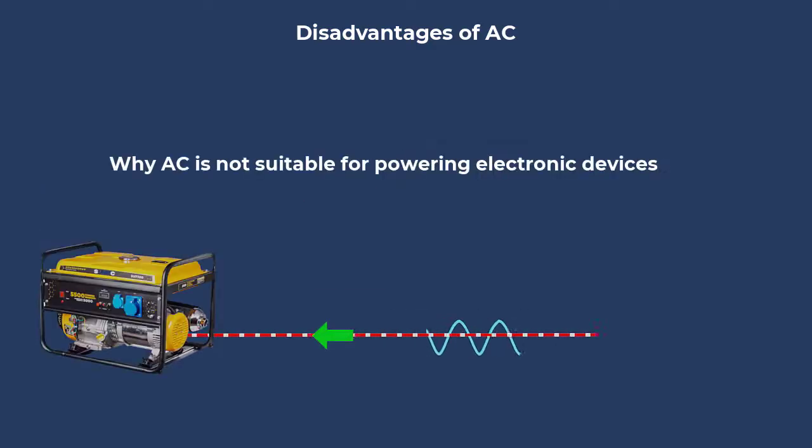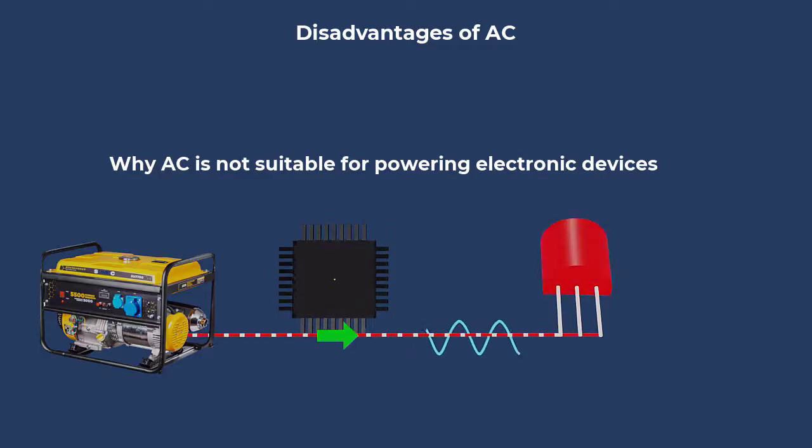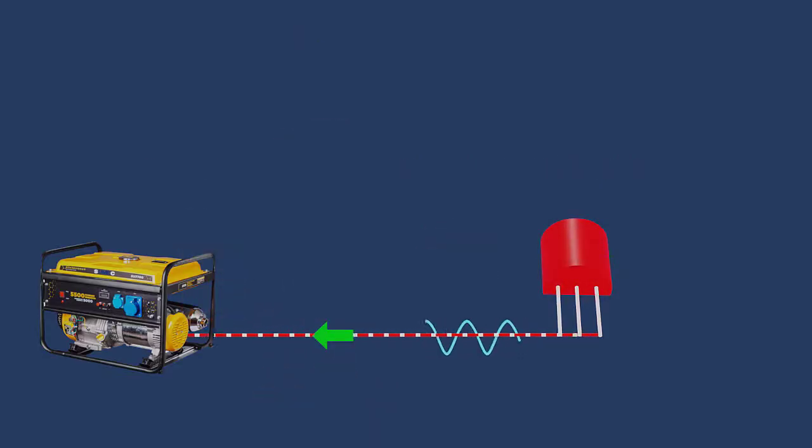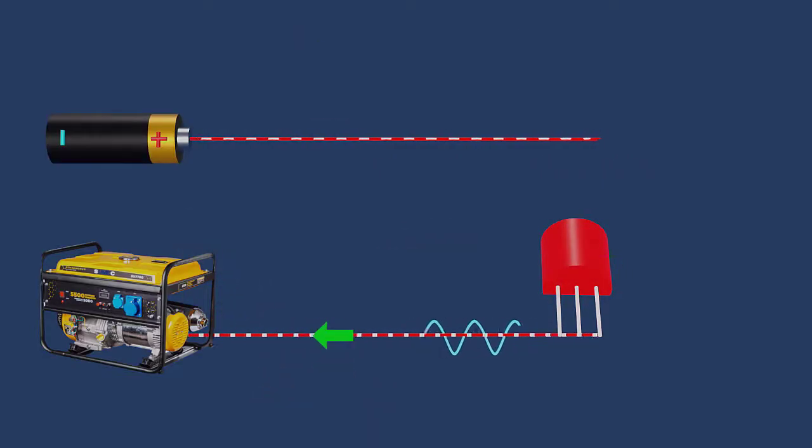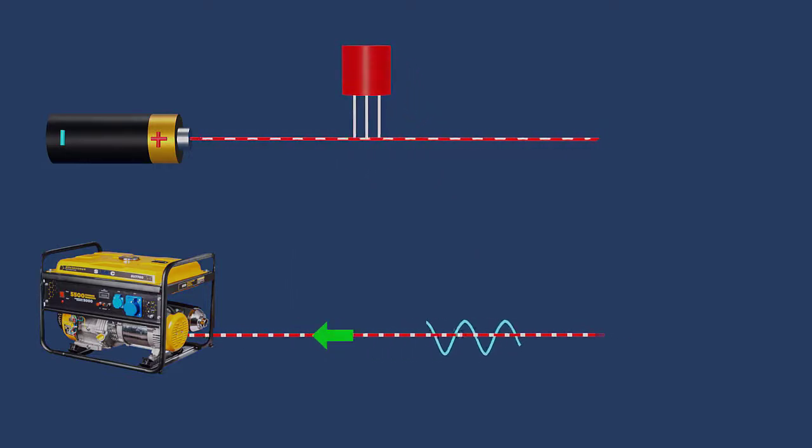The alternating voltage and direction of AC can damage sensitive electronic components like transistors and integrated circuits, causing malfunctions, overheating, or even permanent damage. Therefore, for precise and reliable operation, most electronic components require a steady and constant voltage, which DC precisely provides.